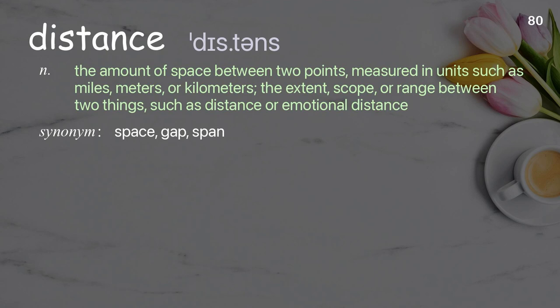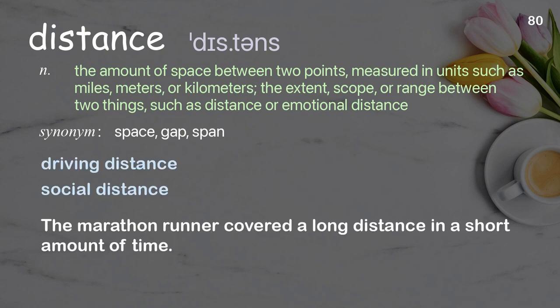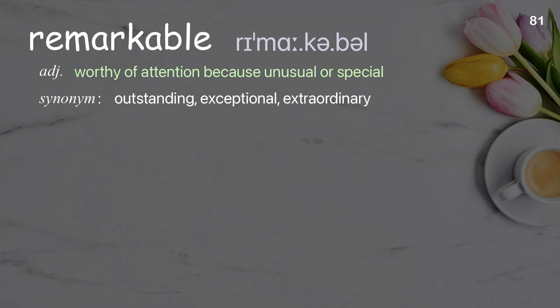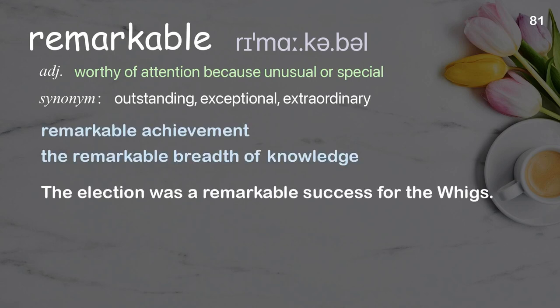Distance: The amount of space between two points measured in units such as miles, meters, or kilometers; the extent, scope, or range between two things. Examples: driving distance, social distance. Remarkable: worthy of special attention. Examples: remarkable achievement, the remarkable breadth of knowledge. The election was a remarkable success.